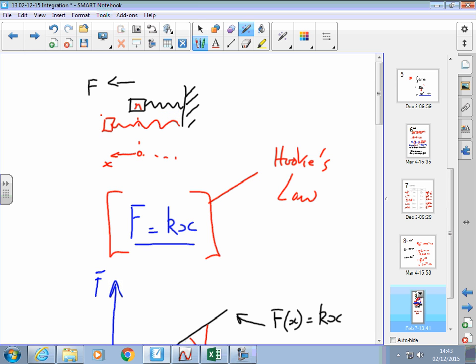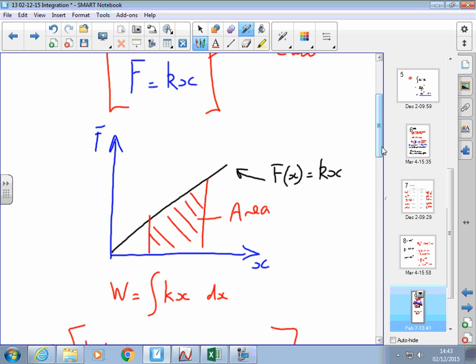F equals kx where k is the spring constant so the bigger k is the stiffer the spring and if you think about the graph then as we've discussed already the gradient of this line tells us the stiffness of the spring, the elastic modulus, Young's modulus.